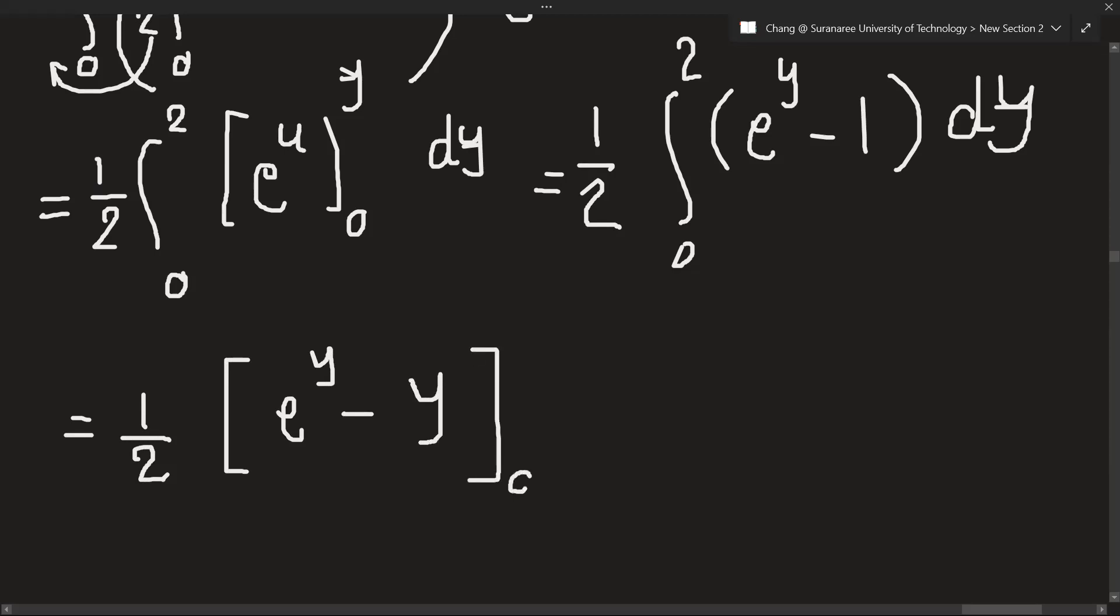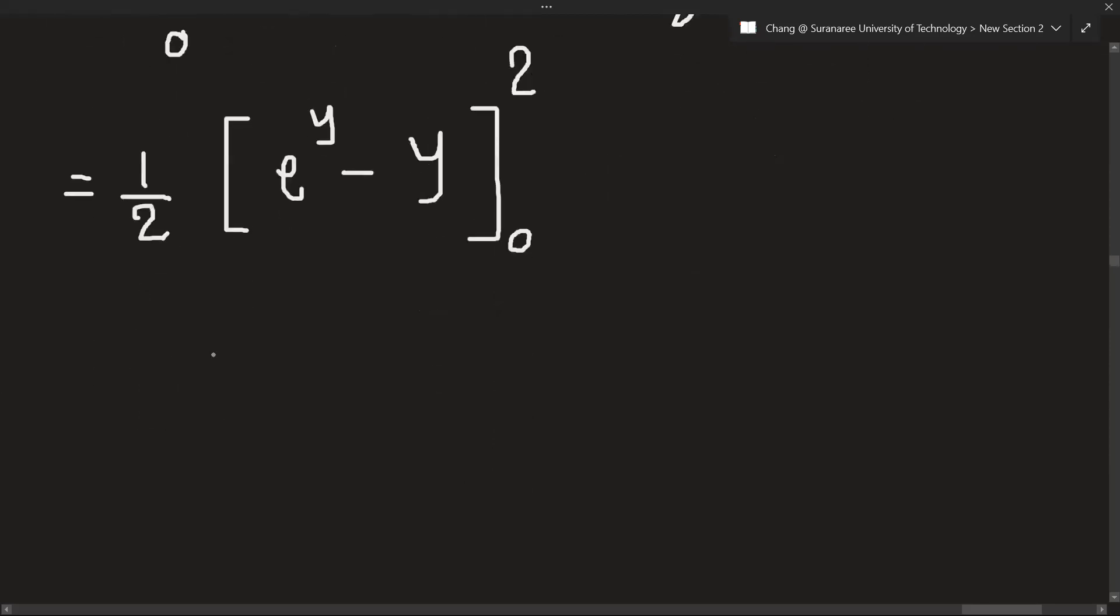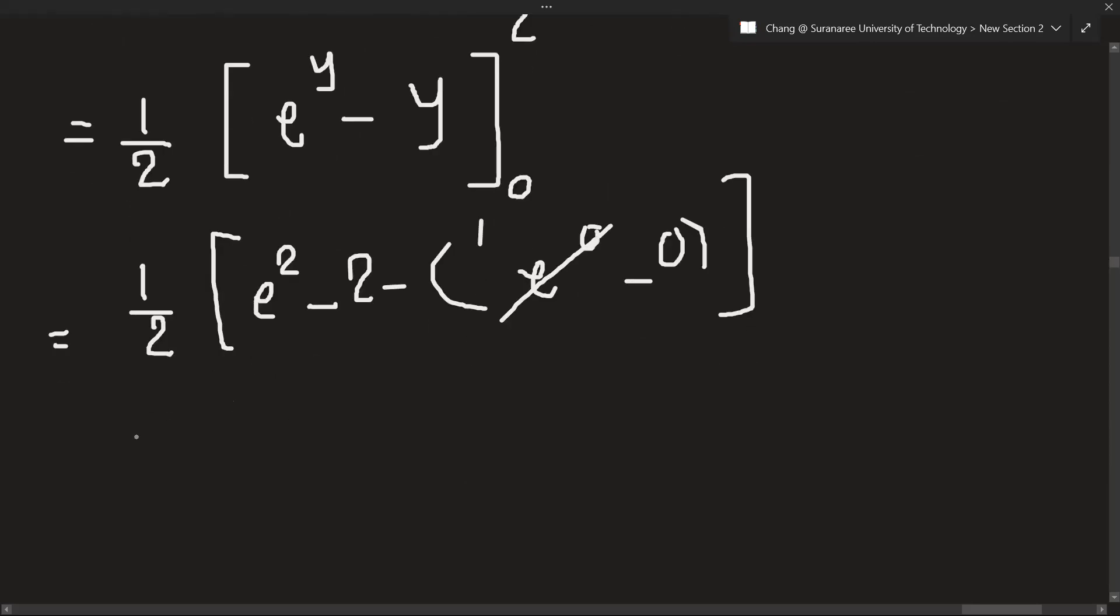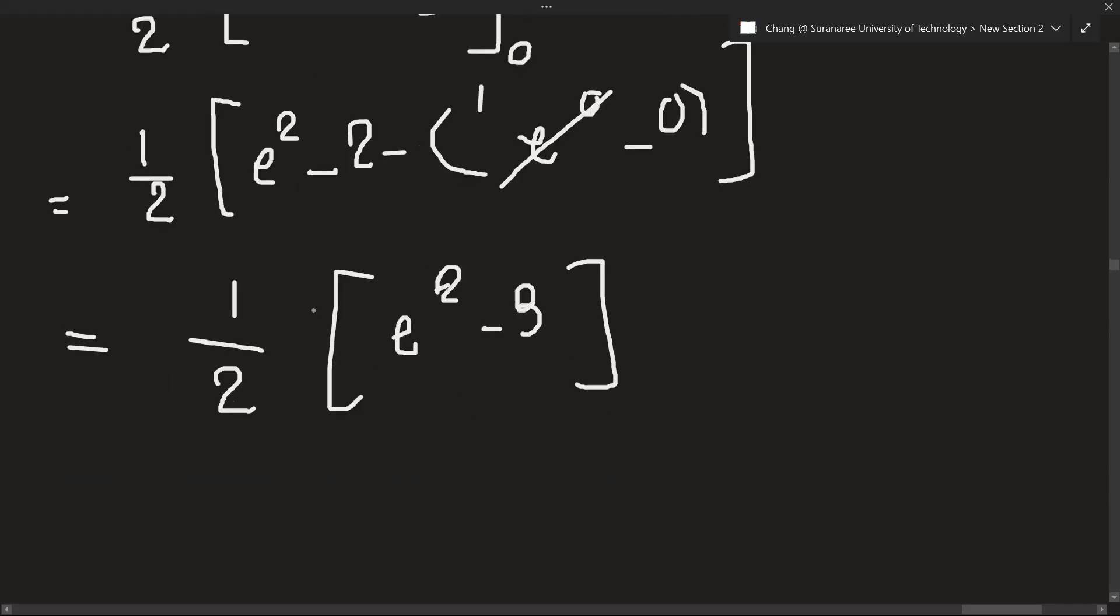One over two, so let's put: e² minus 2, minus e^0 minus 0. e^0 is 1, so minus 2 minus 1 we will get one over two times (e² minus 3).